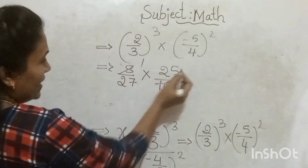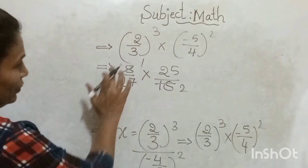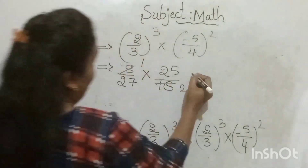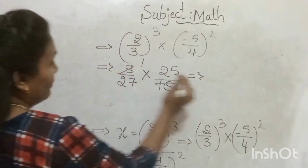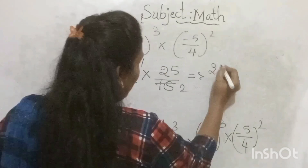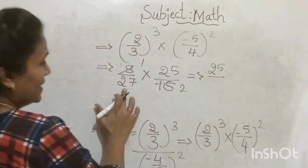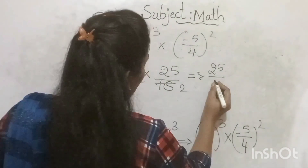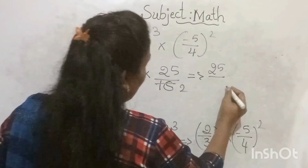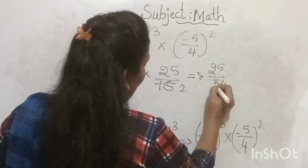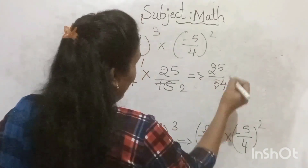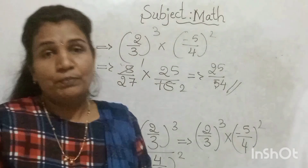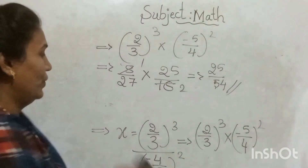3³ = 27. Now checking for cancellation: 25 and 27 — no common factors, so no cancellation. The result is 25 × 8 = 200 in numerator and 27 × 16 = 432... so 25 ones are 25, divided by 27 × 2 = 54. The answer is 25/54.